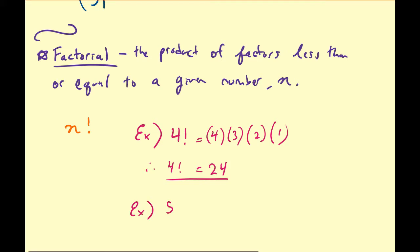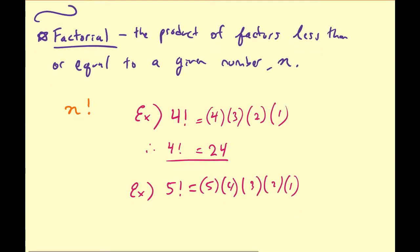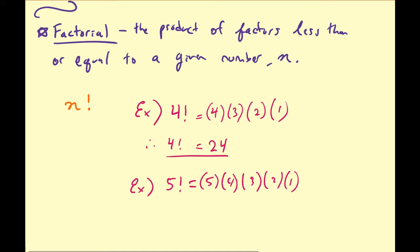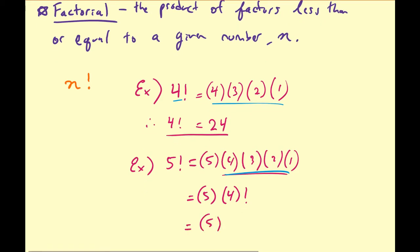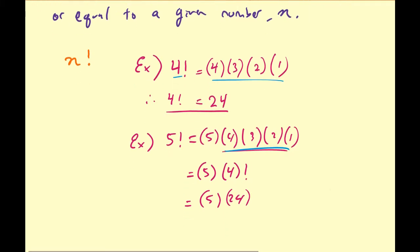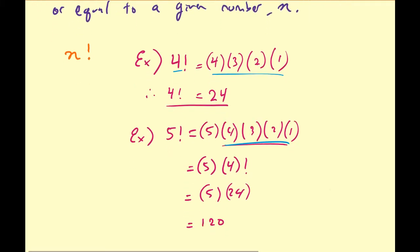Another example: what would 5 factorial be? By definition, this is 5 times 4 times 3 times 2 times 1. We can observe that 4 times 3 times 2 times 1 is the same as 4 factorial, so we can represent this as 5 times 4 factorial, which is 5 times 24, equal to 120. So 5 factorial is 120. As n gets big, the factorial gets really big really quickly.